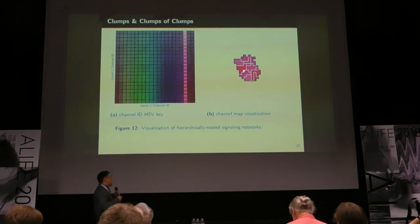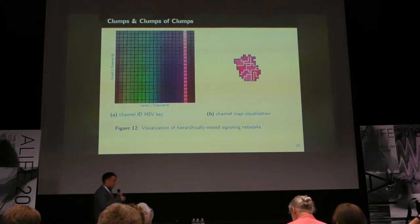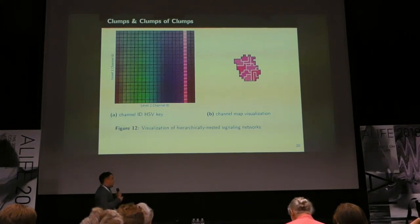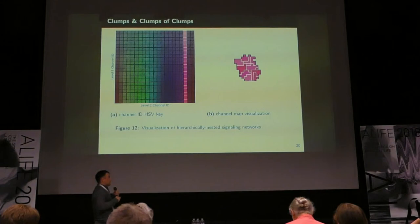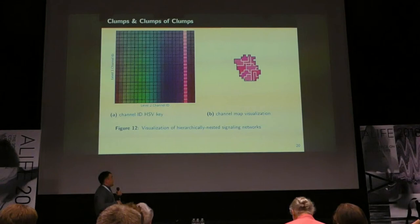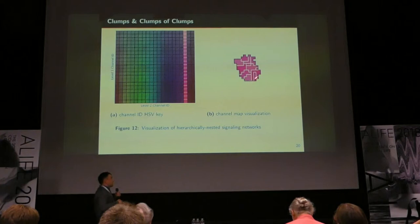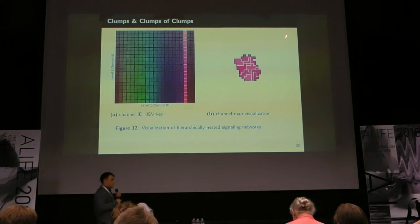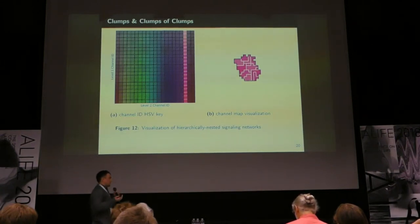We can expect these cells to, once they kind of reach the maximum size for the resource collection task at that low level, to begin making more low-level clumps that are going to unite into a high-level clump to complete the larger resource collection task. And the way that we have this color-coded here, the high-level channel is coded by color, so these are all pink cells, and the low-level channel is coded by value, or kind of the tone of the cells. And so you can see these different clumps on different low-level channels united into a clump that's sharing a high-level channel.